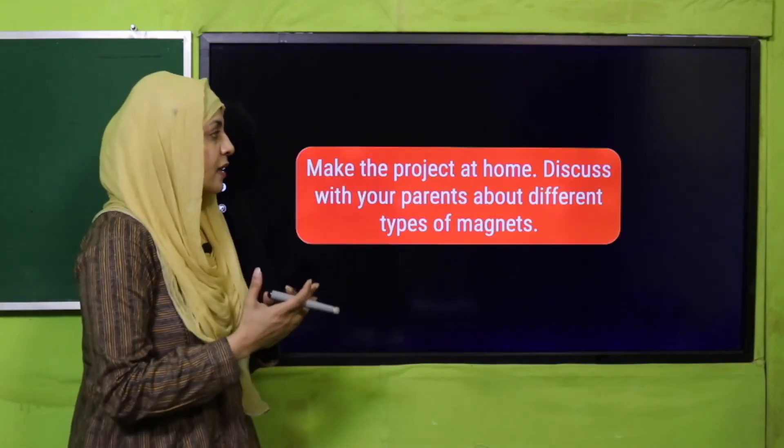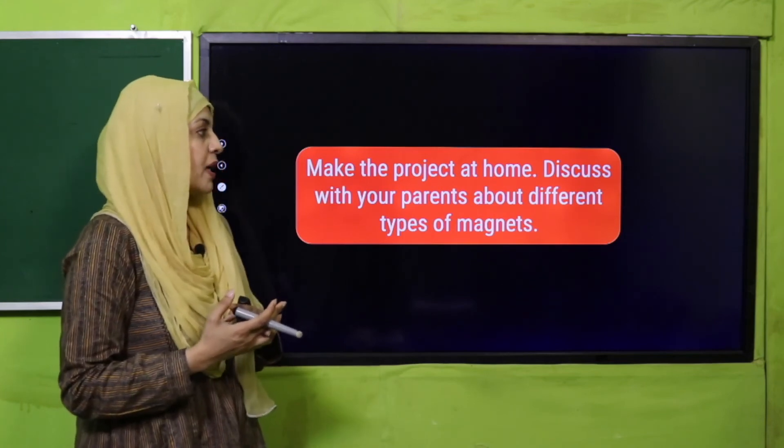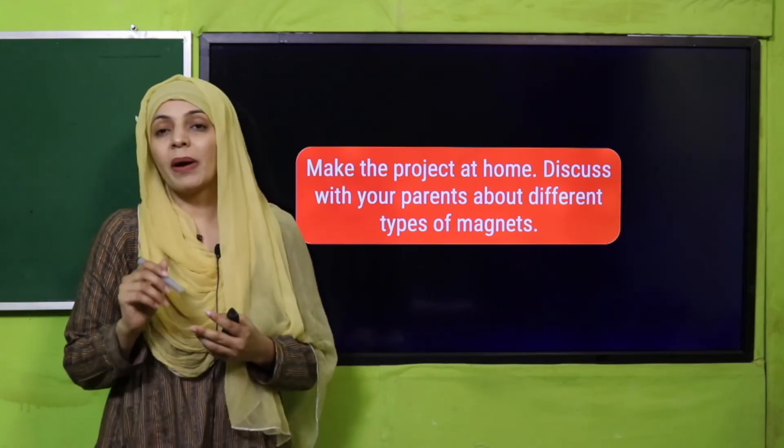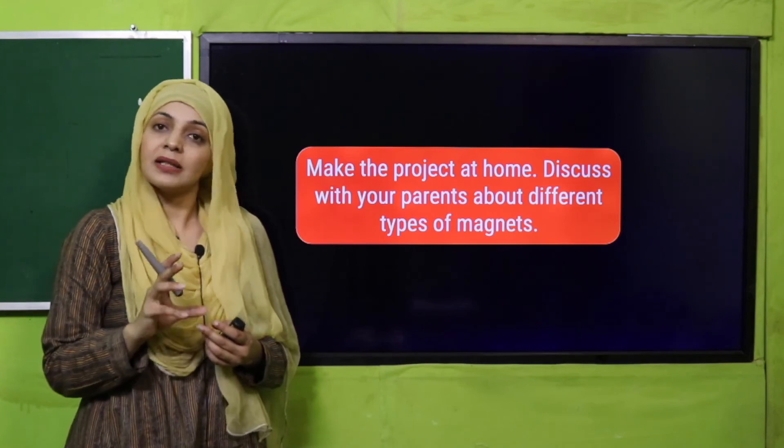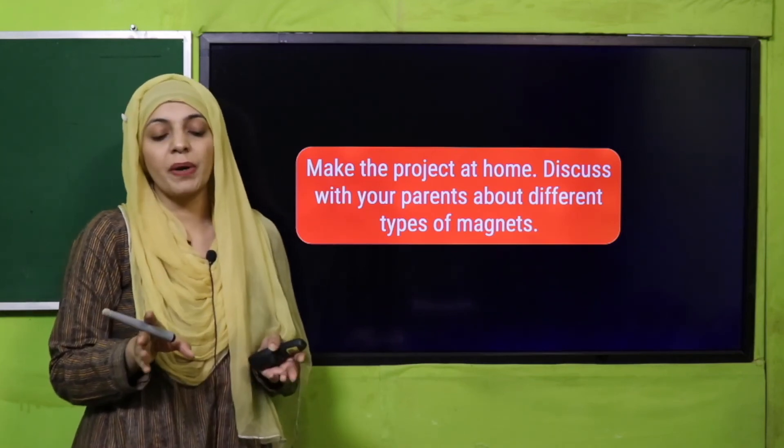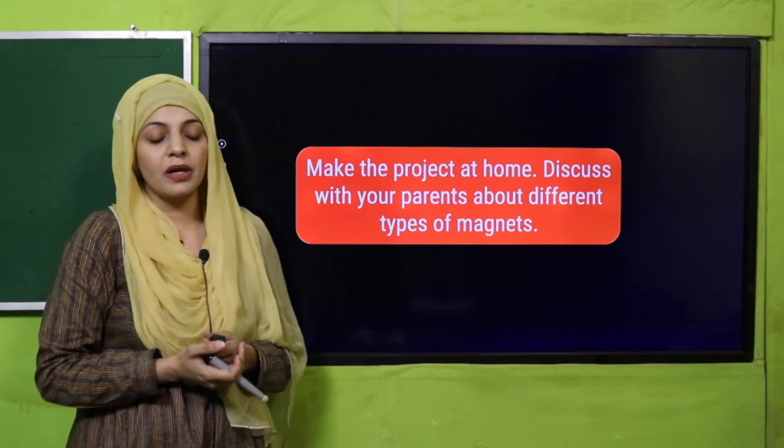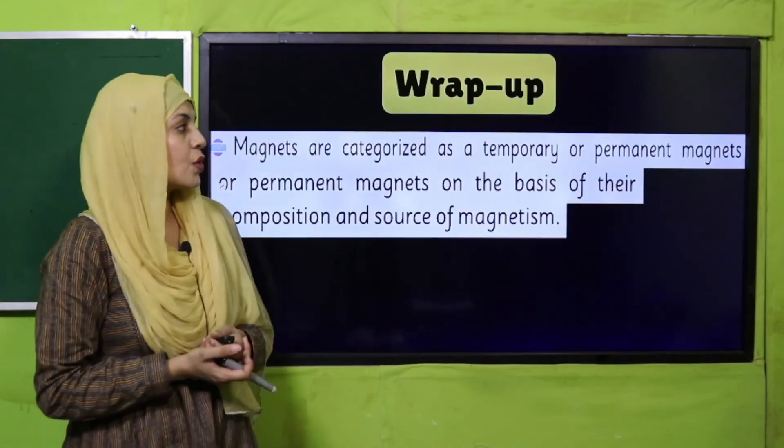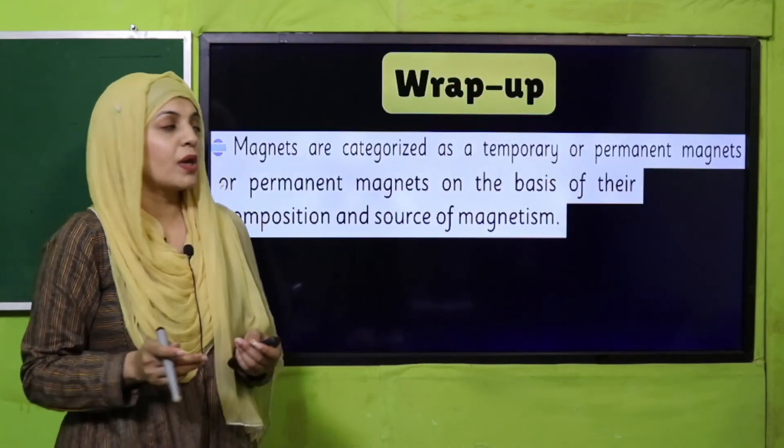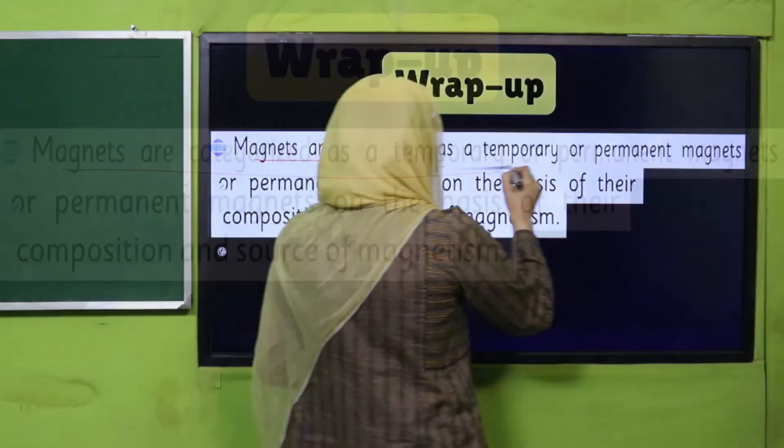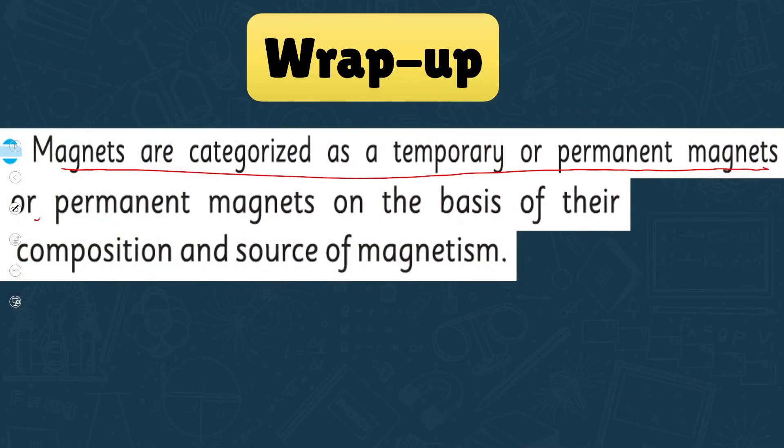Today in homework, what will you do? Make the project at home. Discuss with your parents about different types of magnets. So my dear students, today you have to make an electromagnet at home and discuss it with your parents. Very simple apparatus is required, so you have to discuss it with your parents also. Okay, my dear students. So today what did we study?